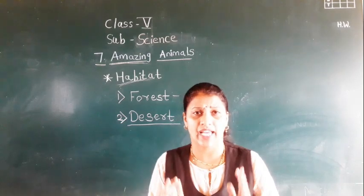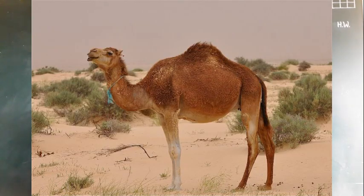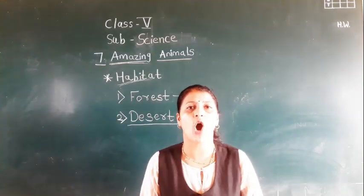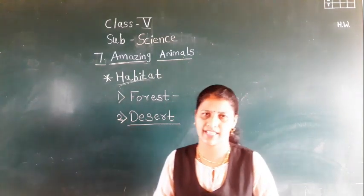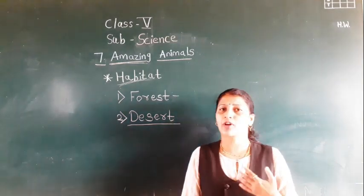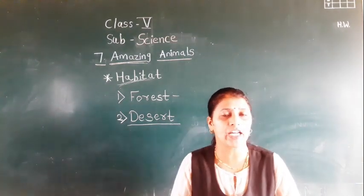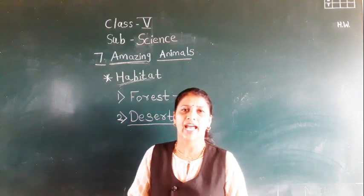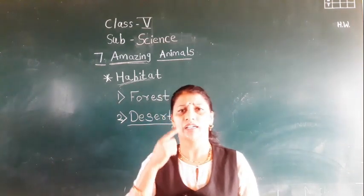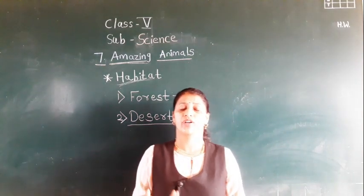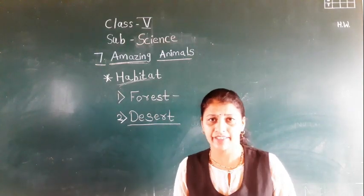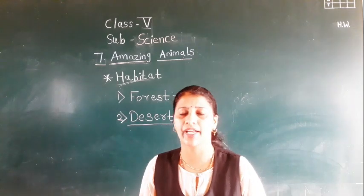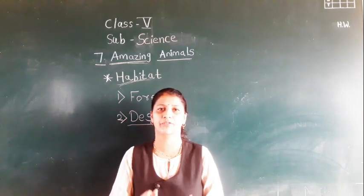If you see the camel properly, it has very long legs. Why? To protect it from the hot sand. It also has very long eyelashes. What is the use of these eyelashes? The eyelashes protect it from the sand. So the camel has very long eyelashes to protect it from the sand. This is the structure of the camel — very long legs and a fat hump which stores food and water for a long time.